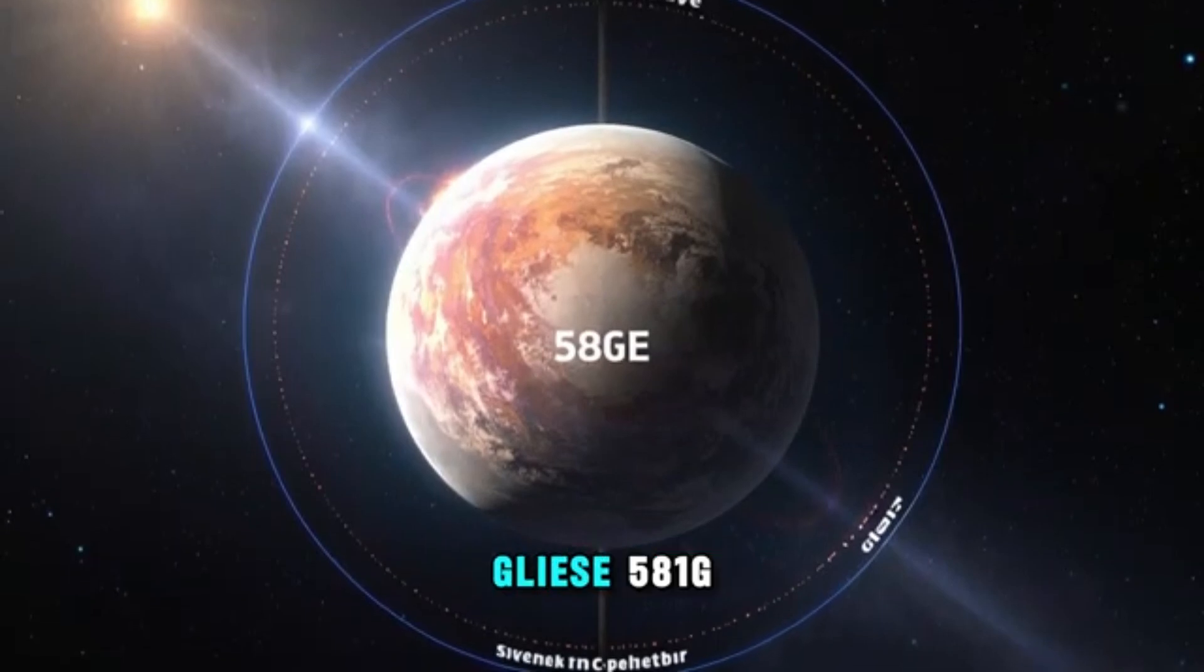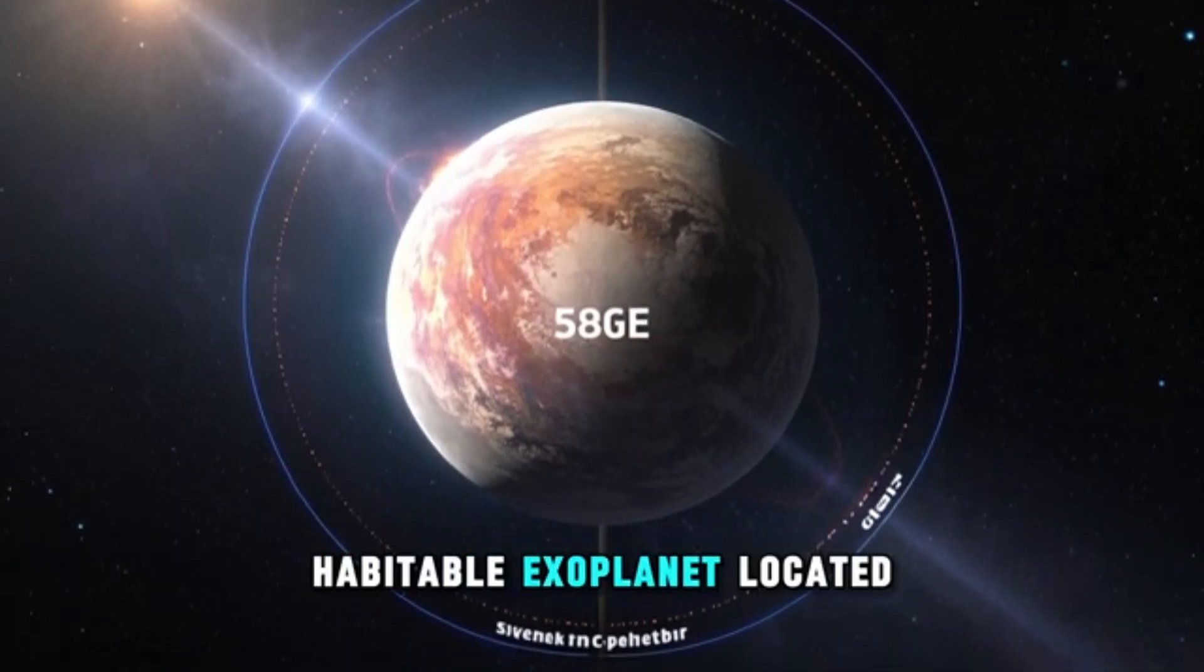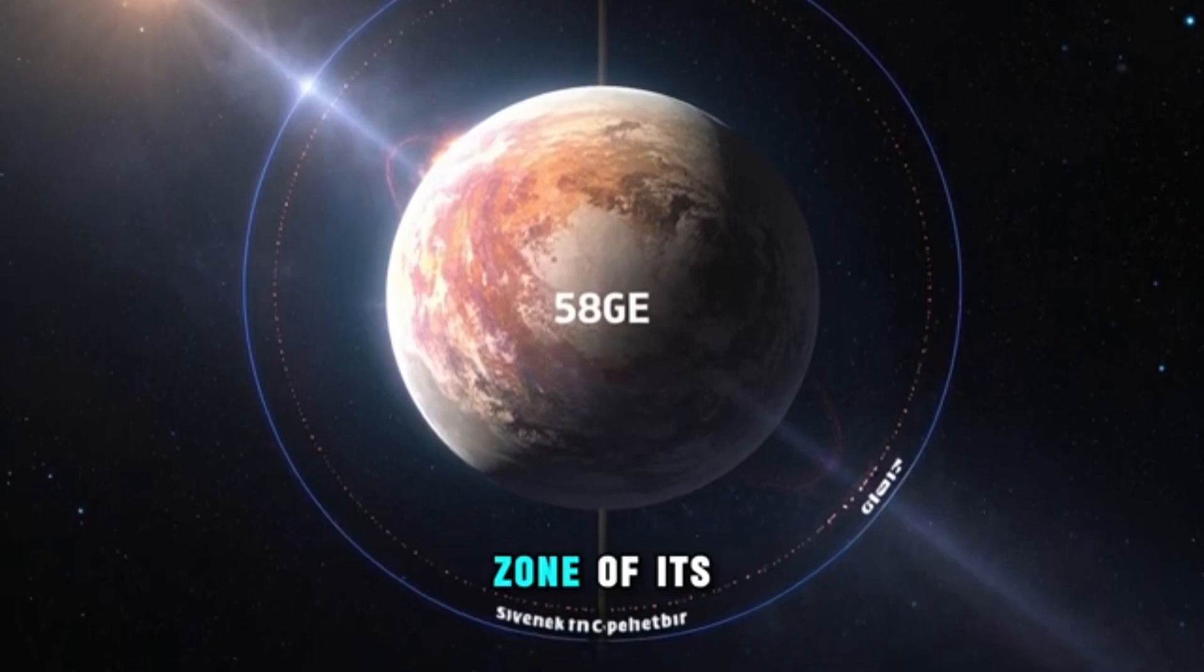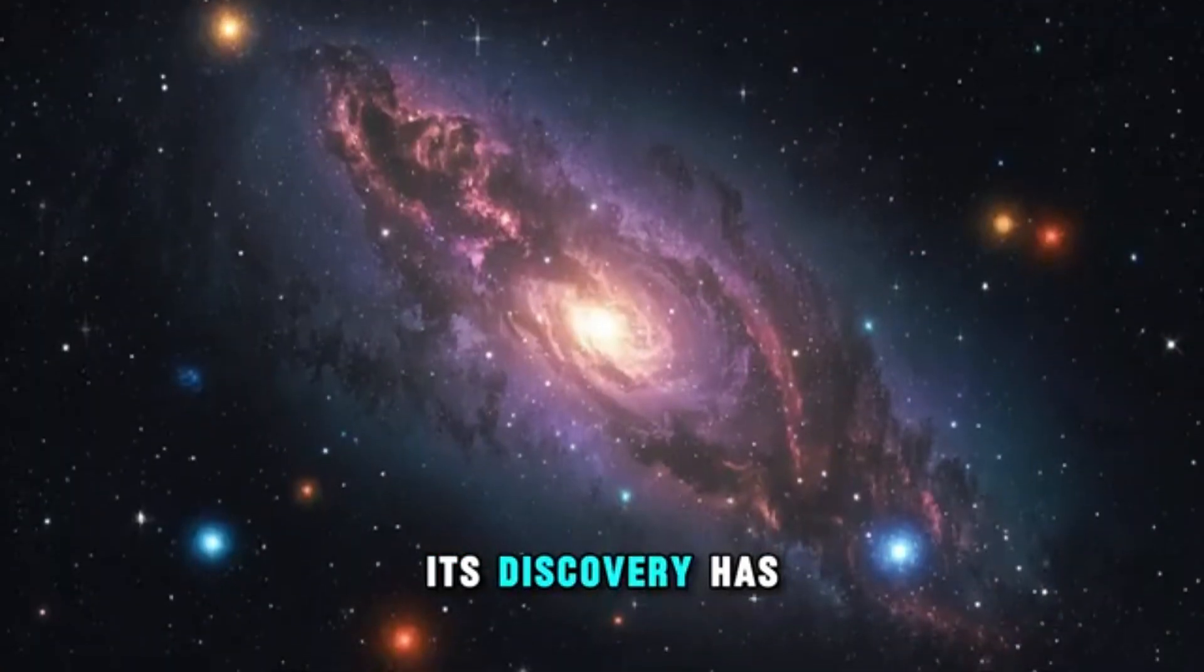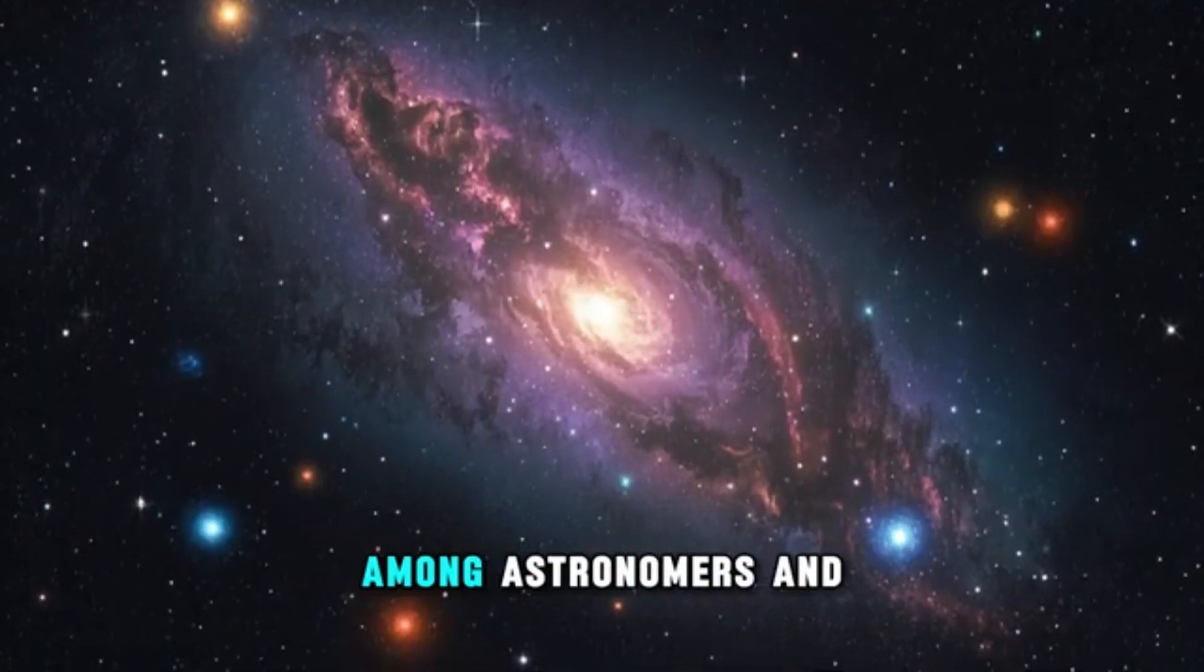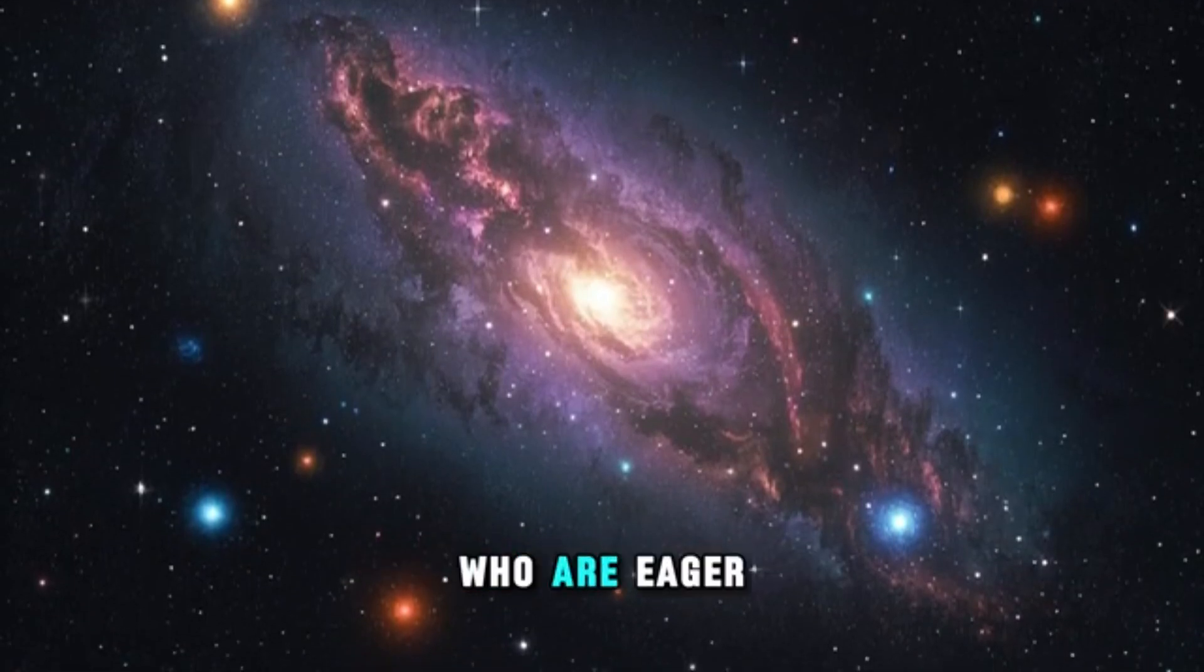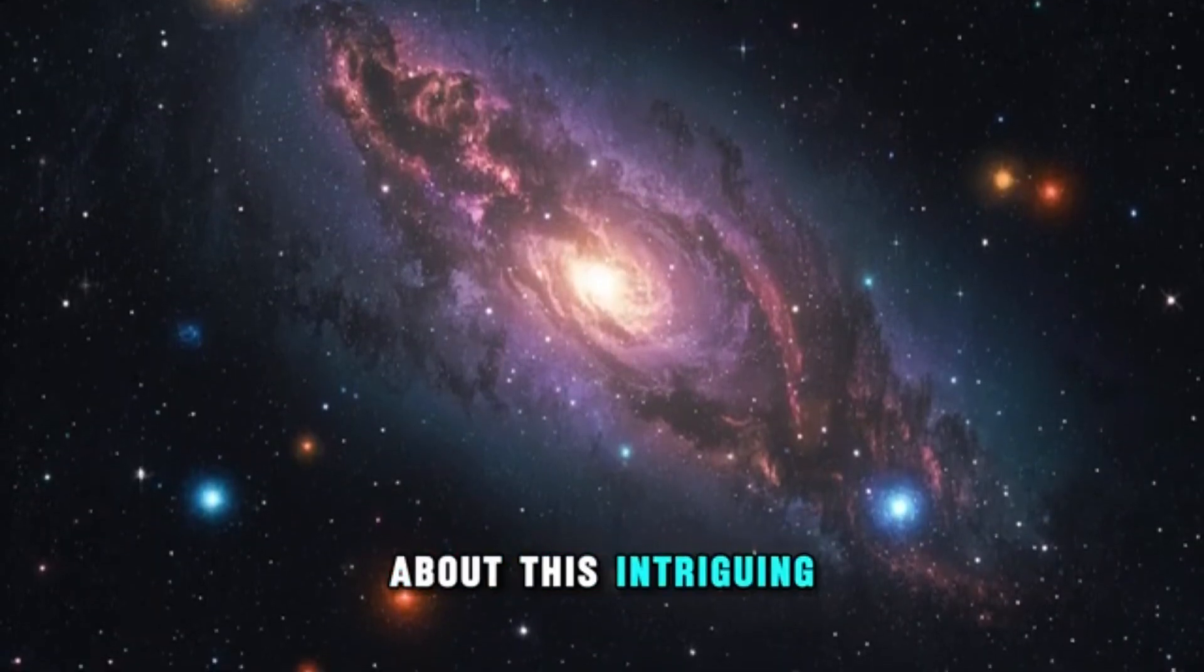In conclusion, Gliese 581g is a potentially habitable exoplanet located in the habitable zone of its parent star. Its discovery has generated significant interest among astronomers and scientists who are eager to learn more about this intriguing world.